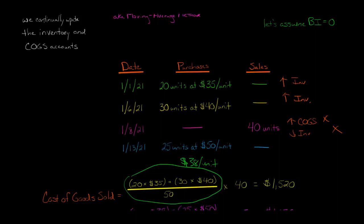If we were later to sell some more inventory, we would have to calculate a new average cost. That's why this is also called the moving average method. When you use a perpetual inventory system and you do this average cost, you don't always just take it as $38 a unit if there are future sales.